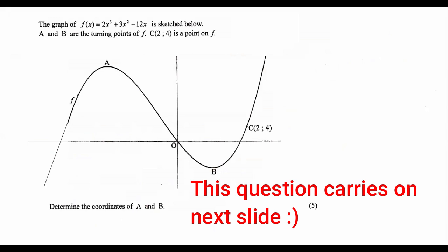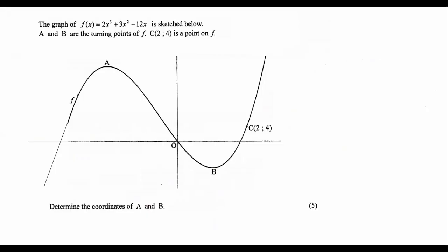The graph is given and A and B are the turning points. We need to determine the coordinates of A and B. This is an easy question because we know that to find a turning point — those points on the graph — we know that is where the gradient of the graph is equal to zero. To find the turning point of a cubic graph, you must take the first derivative and then make it equal to zero.